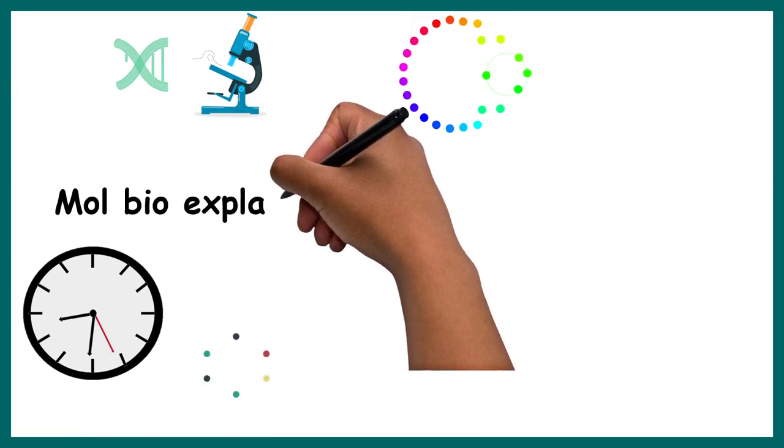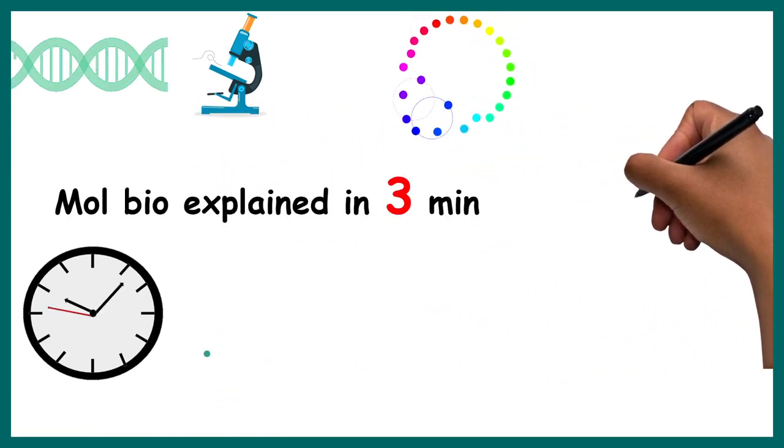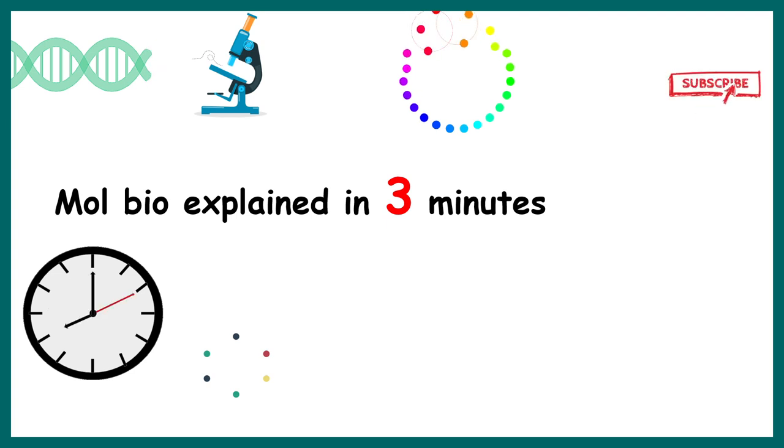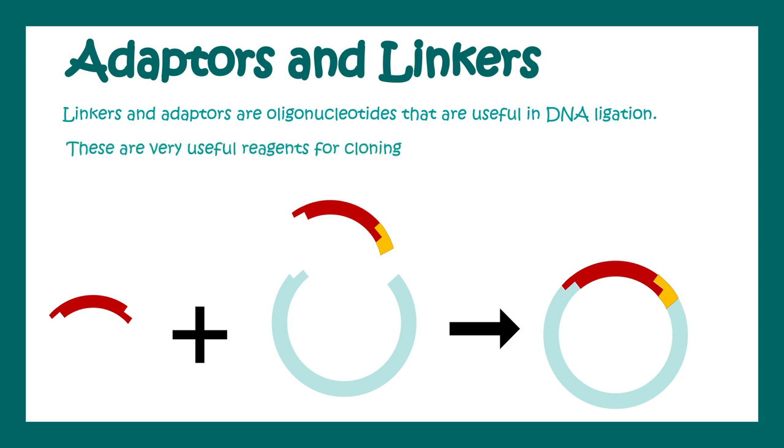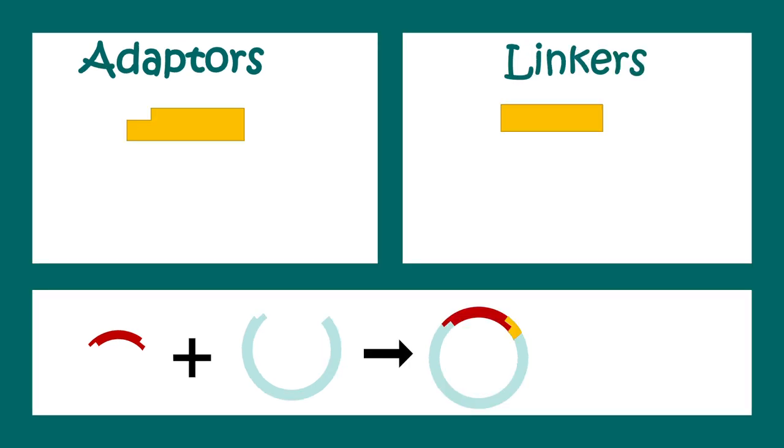Welcome to the video series Molbio Explained in Three Minutes, where I explain a concept in molecular biology in three minutes or so. In today's installment, we'll talk about adapters and linkers. These are oligonucleotide sequences that are useful for DNA ligation and are ultra useful for cloning. Let us learn this process in more detail.